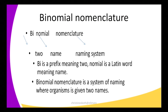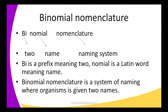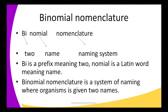Next we are going to look at binomial nomenclature. By defining this word I'm going to subdivide it into three parts: 'bi', 'nominal', and 'nomenclature'. 'Bi' is a prefix that means two; 'nominal' means a name; and 'nomenclature' means a naming system. So binomial nomenclature is a system of naming where an organism is given two names — a naming system for organisms by giving them two names.